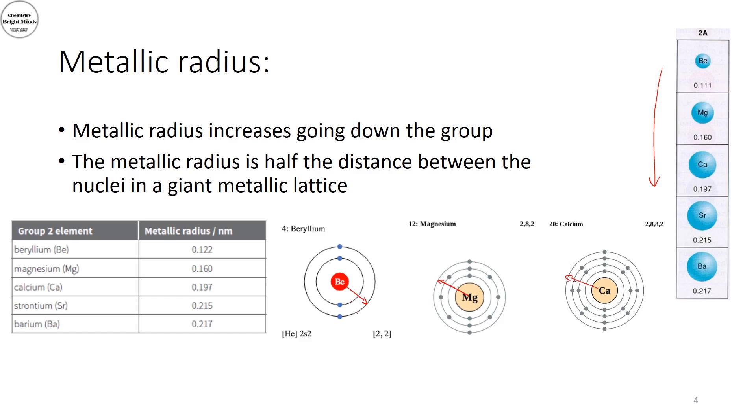And this will just decrease the attraction between the positive nucleus and the valence electrons, leading to the increase in the atomic radius. In here, I have the metallic radius values. And you could see it just increased down the group.